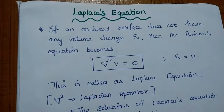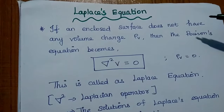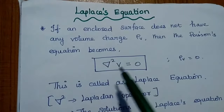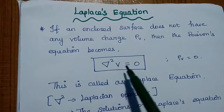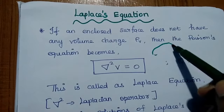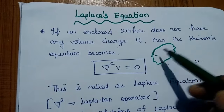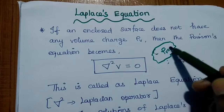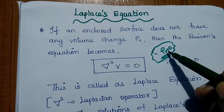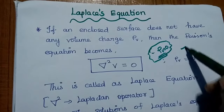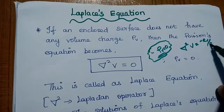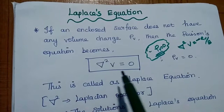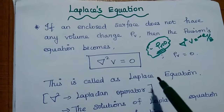Next is the Laplace equation. If an enclosed surface does not have any volume charge density, then the Poisson equation becomes del squared V equals 0. The condition is: if rho V equals 0 in the enclosed surface, then in the Poisson equation del squared V equals minus rho V by epsilon, the right-hand side becomes 0, giving del squared V equals 0. This is called the Laplace equation.